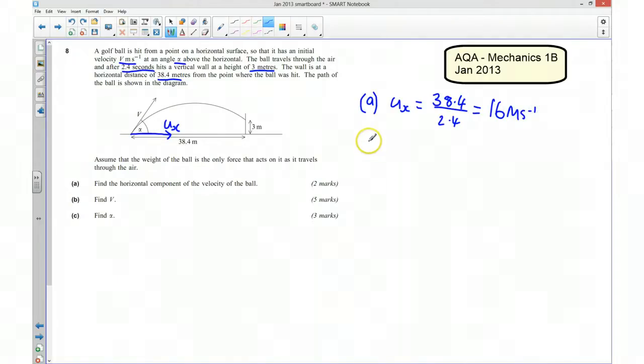For part B, we want to find what v is. So in order to find out what v is, we first of all need to know what the vertical component of the initial velocity is. So in order to work that out, I'm going to write down all the information that I know vertically.